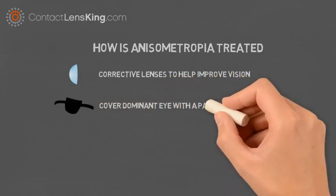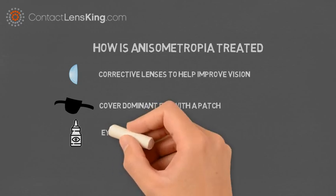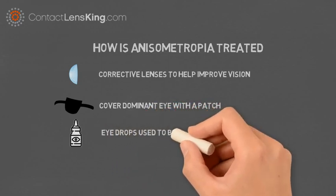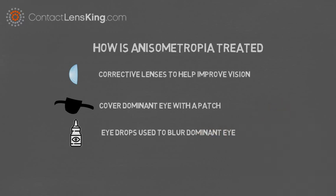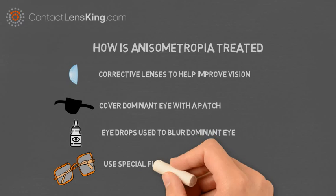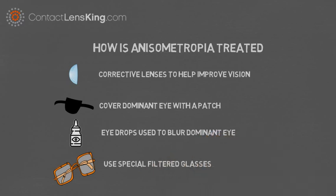Covering the dominant eye with a patch can be an option to treat lazy eye. Using eye drops to blur the dominant eye forces the brain to use the weaker eye. Using special filters in glasses can also train the brain to use the weaker eye.